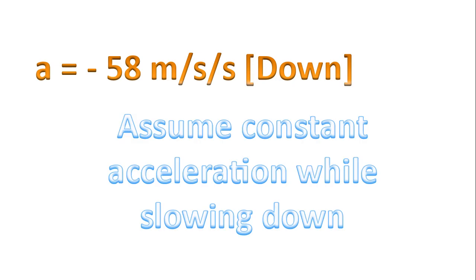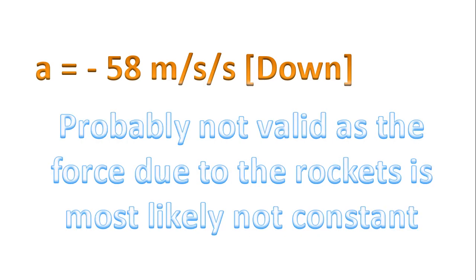Now, what were those assumptions we were talking about? Whenever we use that equation, we are assuming constant acceleration while slowing down. This is probably not valid. It's not valid because the force due to the rockets is most likely not constant. In addition, the drag force is not constant. So this is an assumption that definitely is not valid.